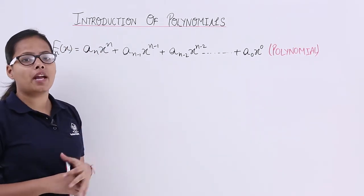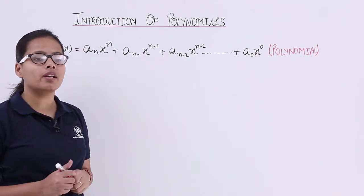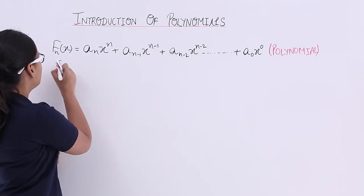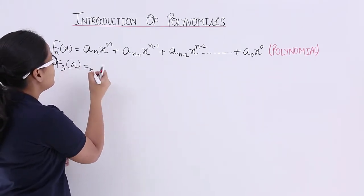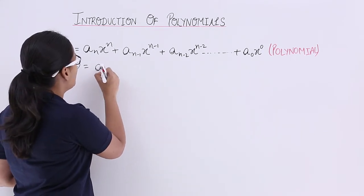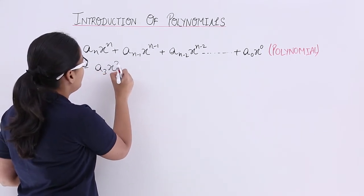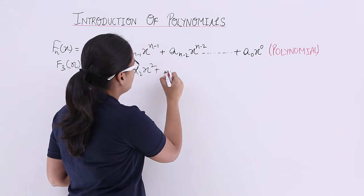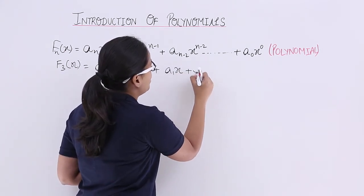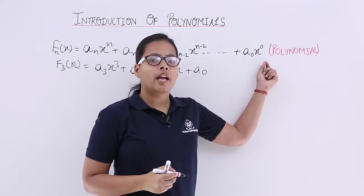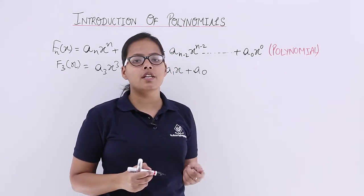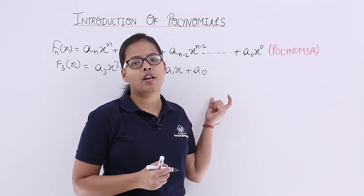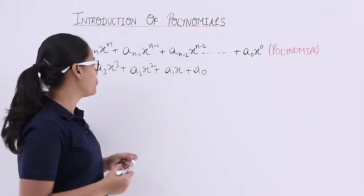If the value of n becomes 3, then what will be this polynomial? If the value of n is 3 then this polynomial will become f(3x) = a3x³ + a2x² + a1x + a0. And if the exponent is 0 of any base then this value will become 1, that's why here a0 times 1 is a0.